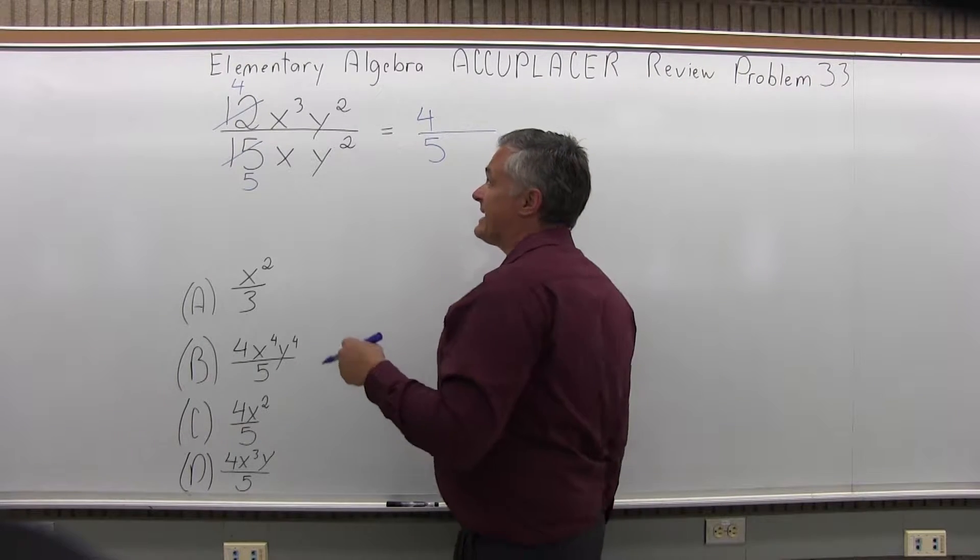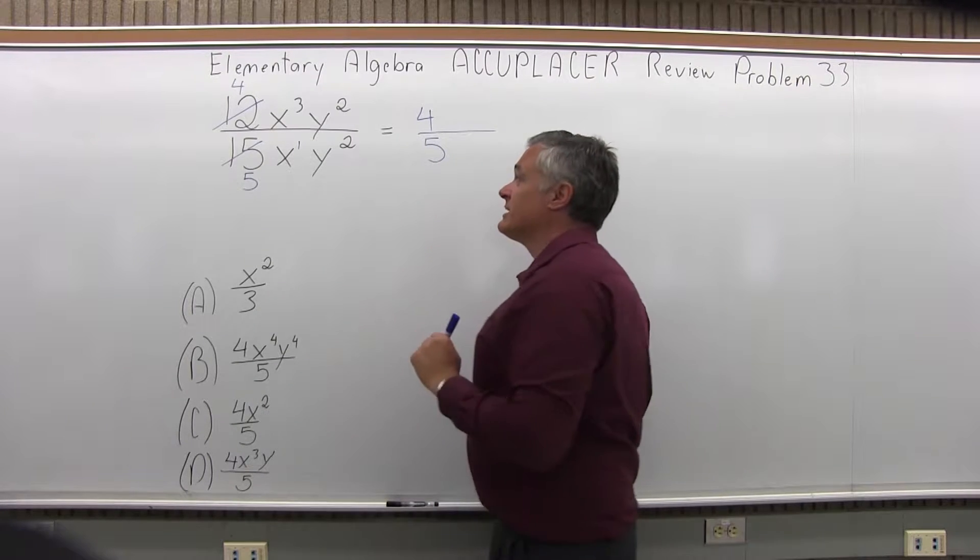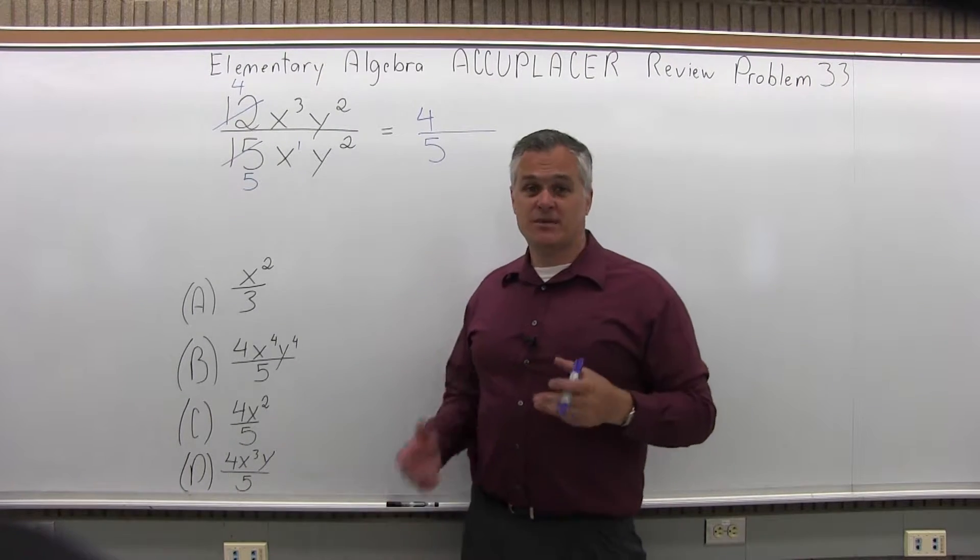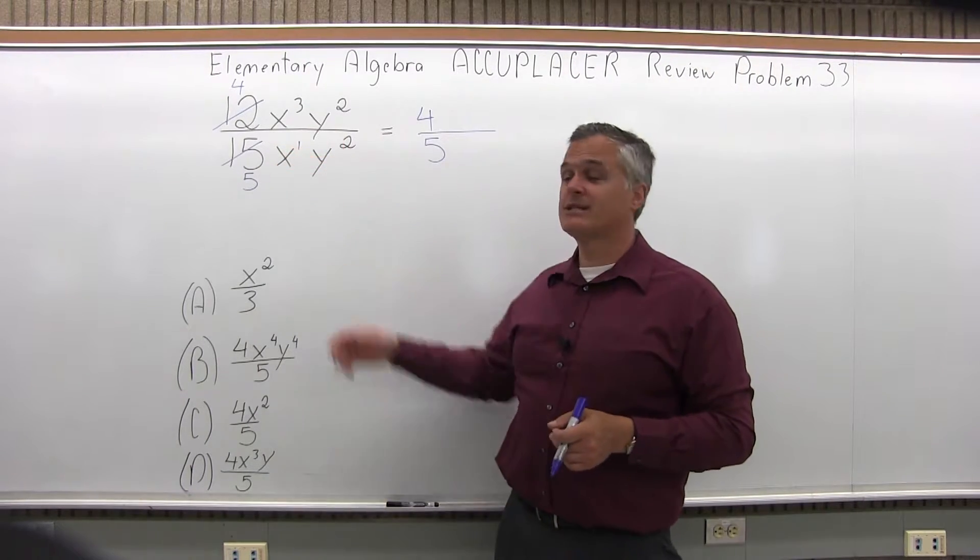Next, look at the x's. I have x to the third over x. Consider the x to be an x to the first and when you have the same base, the base is x for both, you subtract the exponents so you would have 3 minus 1, it would be x to the second.